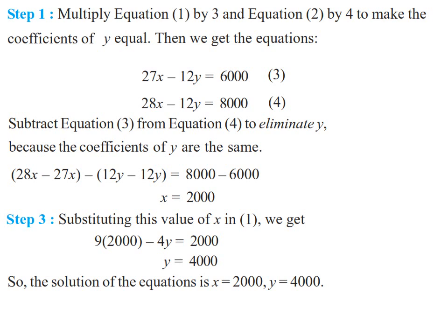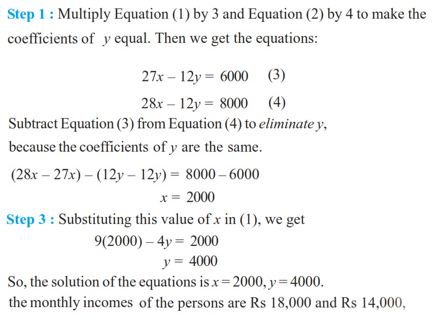x represents income and y represents expenditure. We need to find the monthly incomes, which are 9x and 7x. The monthly income of the first person is 9 into 2000 equals 18,000, and the second person is 7 into 2000 equals 14,000. So the incomes are 18,000 and 14,000. For expenditure, substitute the value of y into the expenditure ratios.